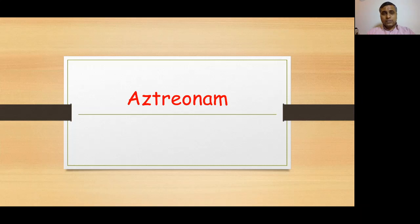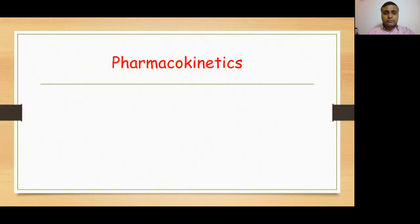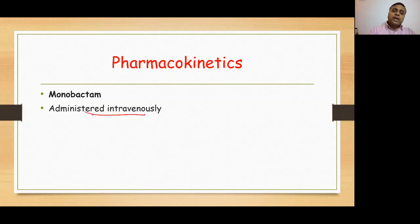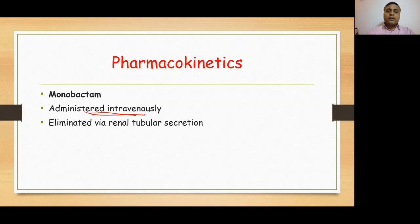In some textbooks aztreonam comes under the heading of monobactams, because by structure they are monobactams. Regarding pharmacokinetics: number one, they are monobactams; number two, they are administered IV. As you remember, in the case of penicillins and cephalosporins some drugs are administered through the oral route and some through IV, but in the case of carbapenems and here in the case of aztreonam, they are given only through the IV parenteral route. They are eliminated through renal tubular secretion.